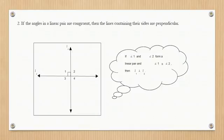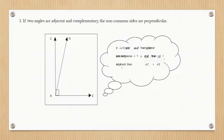Theorem 2: If the angles in a linear pair are congruent, then the lines containing their sides are perpendicular. If angle 1 and angle 2 form a linear pair and angle 1 is congruent to angle 2, then line 1 is perpendicular to line 2. Theorem 3: If two angles are adjacent and complementary, the non-common sides are perpendicular.